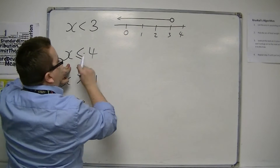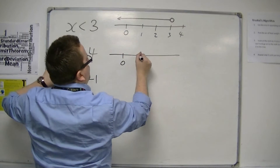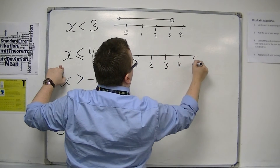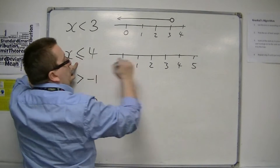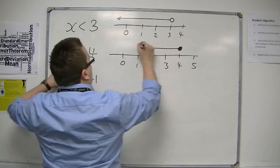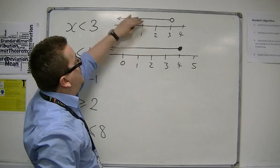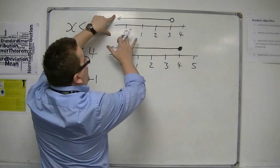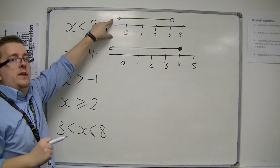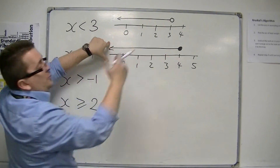As opposed to if I'm saying x is less than or equal to 4. So on the number line: 0, 1, 2, 3, 4, 5. Because it is equal to, I'm going to use a solid dot, and then pointing to the left because I want x to be less than it. So in the first instance x can be any number up until 3, but it can't be 3. While this means x can be any number up to 4, including 4.